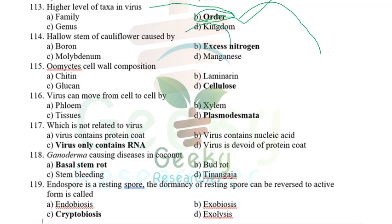Hollow stem of cauliflower is caused by excess nitrogen. Fungal cell wall is made up of chitin, whereas Oomycete cell wall is made up of cellulose and hydroxyproline. This year they asked directly: Oomycete cell wall composition — the answer is cellulose.